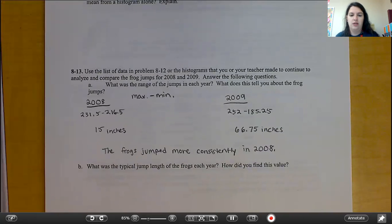Part B, what was the typical jump length of frogs each year? How do you find this value? So, we're working with your other measures of central tendency. We've done range so far. Think about mean and median. That's what you are going to be using here. Go ahead and try and do the mean and median.